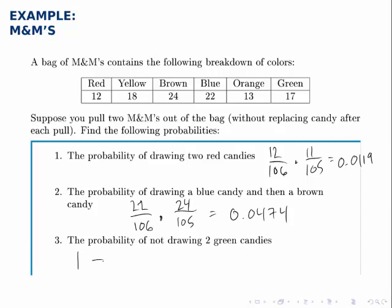So, the probability of drawing two green ones is similar to what we did on part one of drawing two red candies. The probability of drawing a green candy the first time is 17 out of 106, and then if that's successful, the probability of drawing a green a second time is 16 out of 105 because there's 16 green candies left, 105 total left.